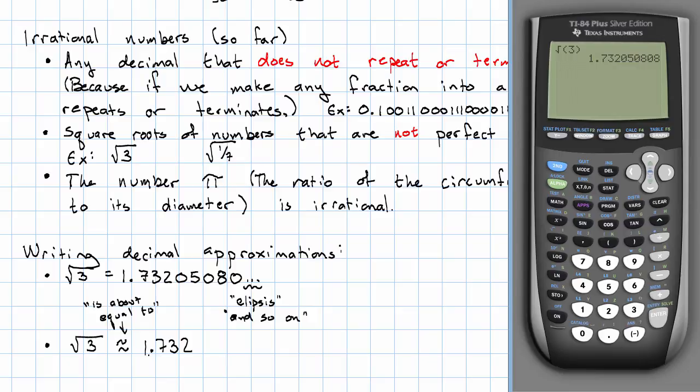Square root of three is not exactly 1.732. If I take 1.732 to the second power, I don't get exactly three. I get about three. I can say that the square root of three is about 1.732 because 1.732 squared is about three.